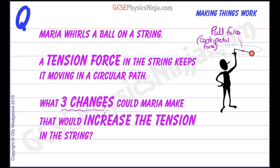Now what three changes could Maria make that would increase the tension in the string? That means increase the centripetal force. What are the changes we could make?